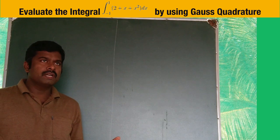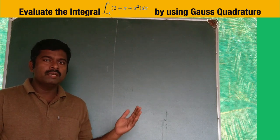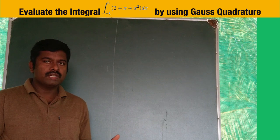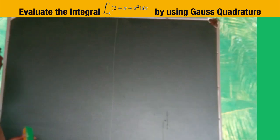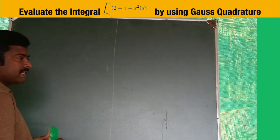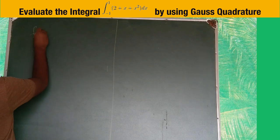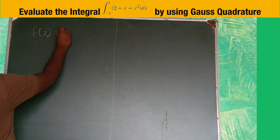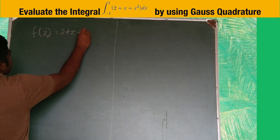Gauss formula has 2-point Gauss quadrature formula and 3-point Gauss quadrature formula. Here in this question, the function f(x) equals 2 + x + x².